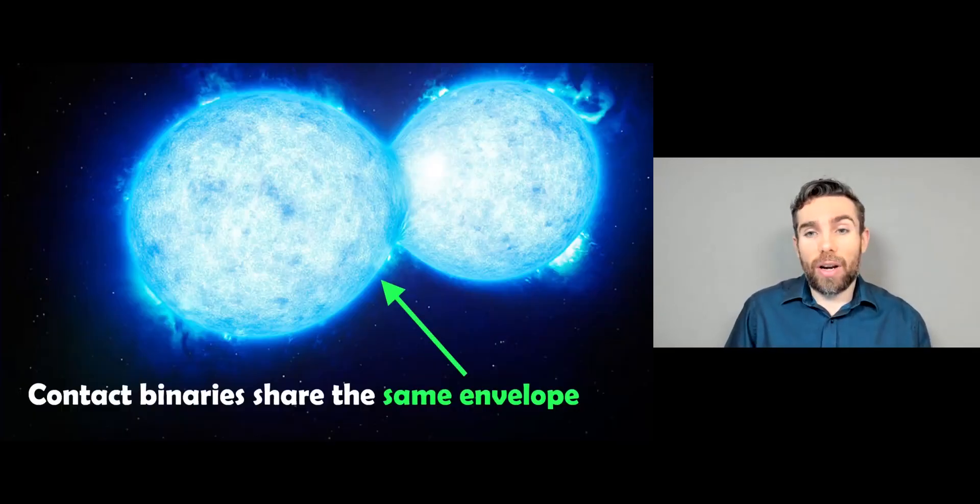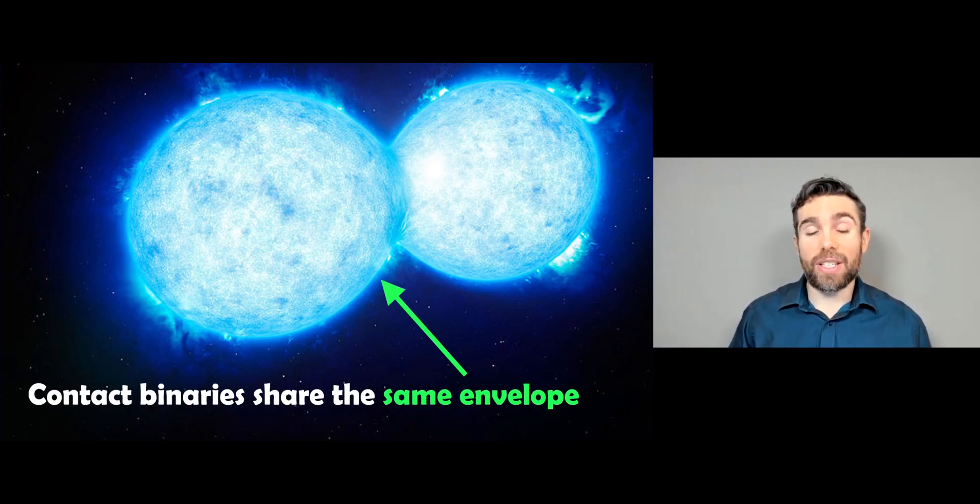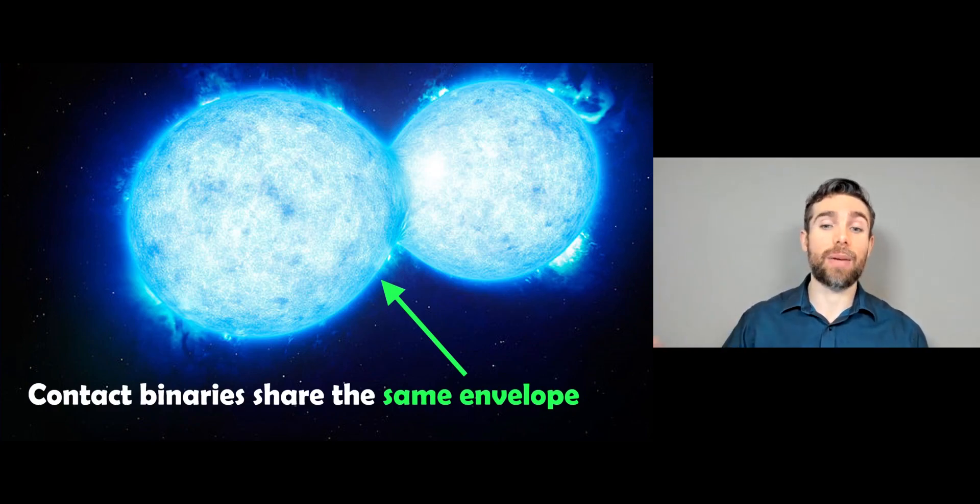But a contact binary is where you've got two stars orbiting each other. So it's a binary system. But this time round, they're so close to each other that their outer envelope, almost like their outer atmosphere, is the same as each other. So they actually share the same envelope between the two stars. They're that close together that they're no longer individual stars. They're actually touching each other. But they're still orbiting a common center of mass. So there's still a binary system, but they are under the same envelope.